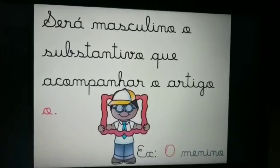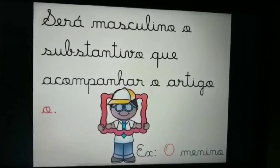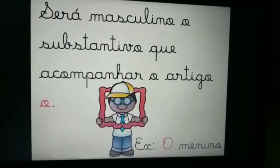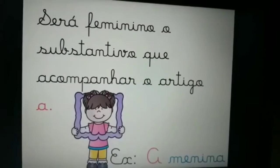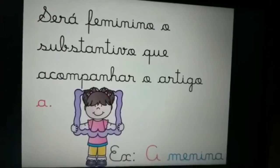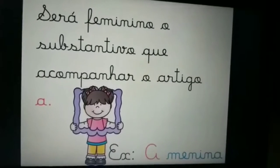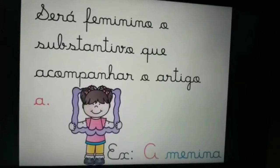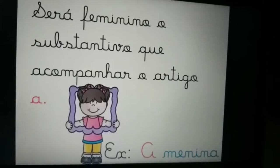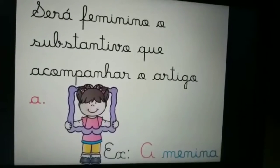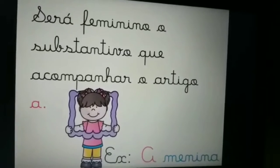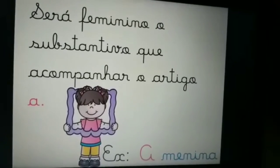Nós temos aí substantivos masculinos, onde são acompanhados pelo artigo O. Já o substantivo feminino, ele vem acompanhado pelo artigo A. Então, nós temos como exemplo: a menina, a moça, a mulher, a gata, a idosa. Nós temos aí os substantivos acompanhados pelo artigo A.